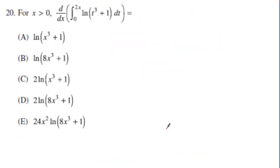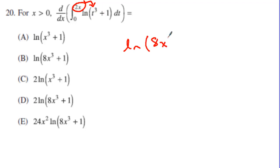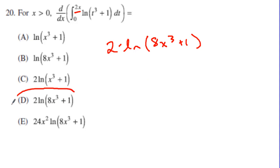Number 20 uses the Fundamental Theorem of Calculus — I'm taking the derivative of the integral. I plug in 2x, giving me natural log of (2x) cubed, which is 8x cubed plus 1. Don't forget I also have to take the derivative of the upper limit 2x, and the derivative is 2. So I have 2 times natural log of 8x cubed plus 1, which is D.